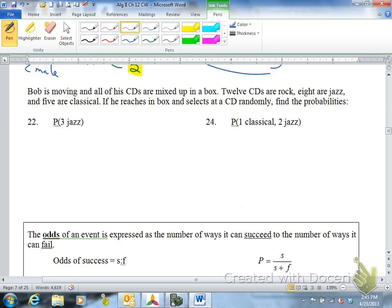Bob is moving, sadly. And all of his CDs are mixed up in a box. 12 CDs are rock, 8 are jazz, and 5 are classical. If he reaches into the box and selects 3 CDs randomly, find the probabilities. Notice he's picking a group. Probability he gets 3 jazz. Notice it's probably going to be really unlikely that he gets 3 jazz. Most likely, he's not going to get 3 of the same kind. He's probably going to get like 2 rock CDs and 1 jazz CD. So the probability is probably going to be really low. Make sure you use combinations. And then for number 24, you're going to do classical times the number of ways to get 2 jazz.